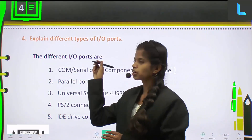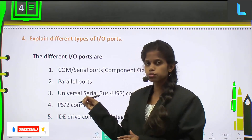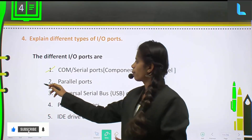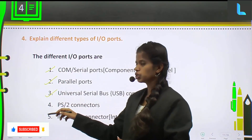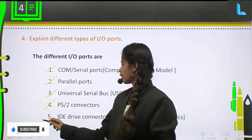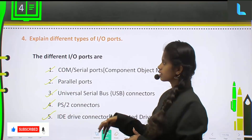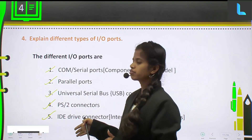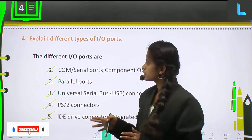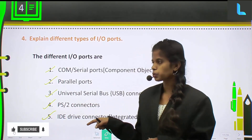Explain different types of IO ports. The classification or types of ports are: COM port, parallel port, USB port, PS2 connectors, and IDE drive connectors. These are the five different types of IO ports that you can see on the motherboard. First you should list them, then you can go on to explaining each one of them.